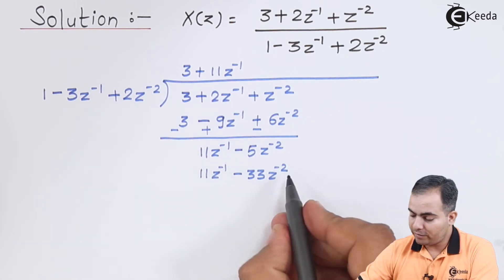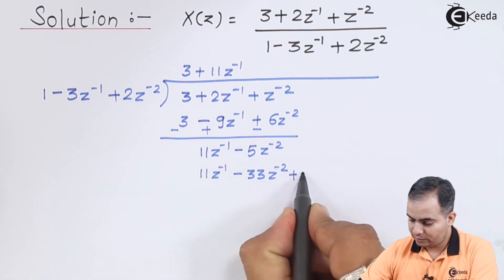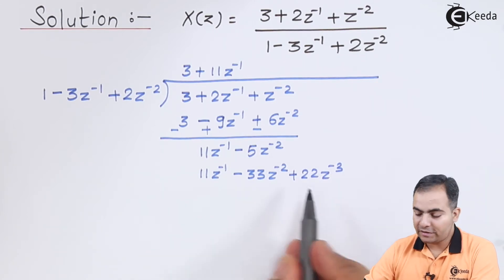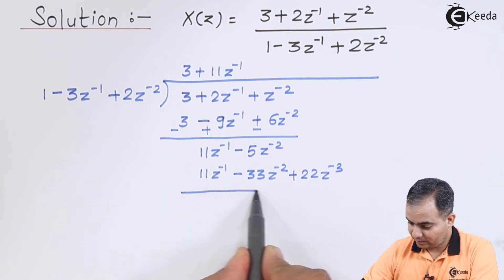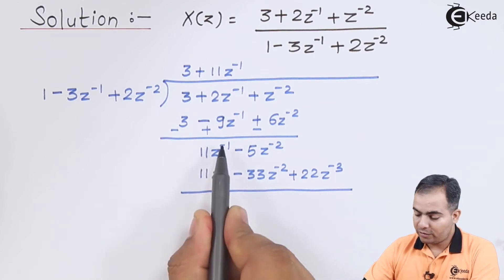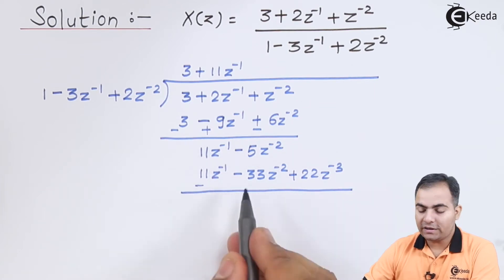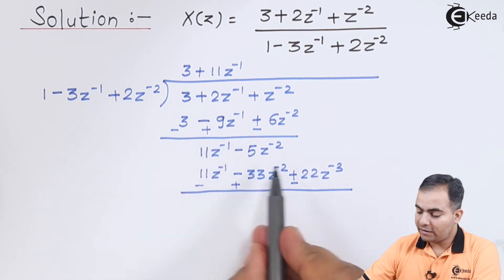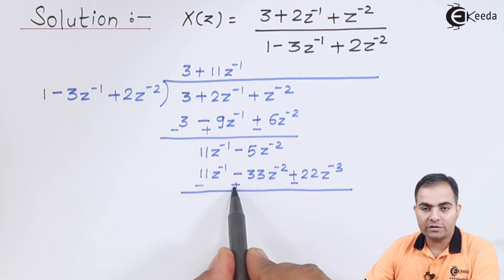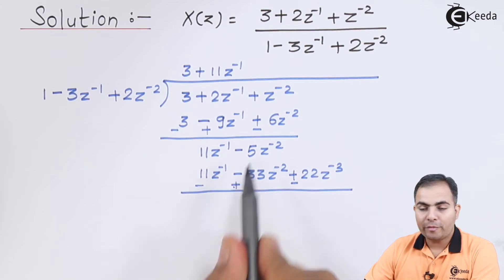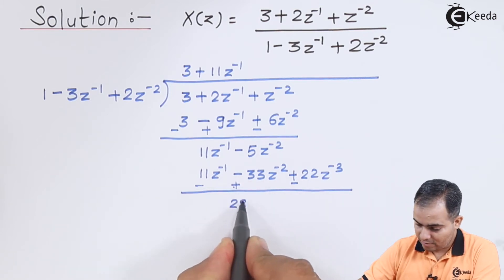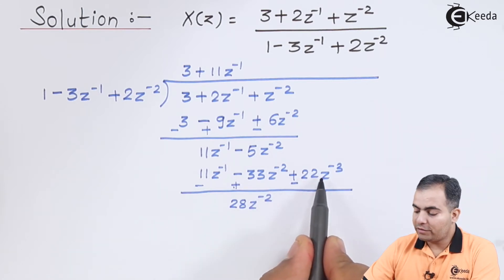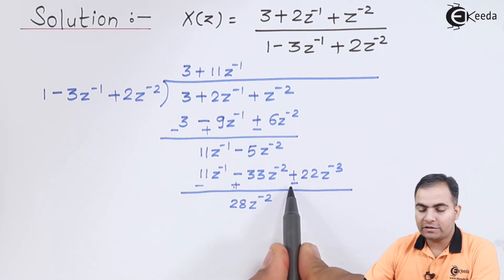And the last one: 11 times 2 is 22, with the power adding to give Z⁻³. To cancel, we change the sign. These two terms cancel. The 33 sign changes to plus, so plus 33 minus 5 gives 28Z⁻². The 22Z⁻³ sign changes to minus, giving minus 22Z⁻³.